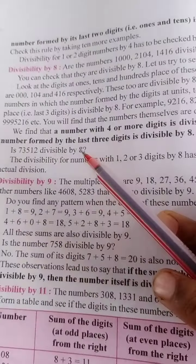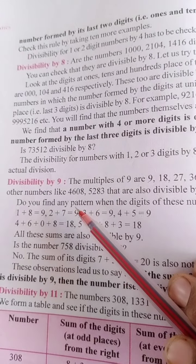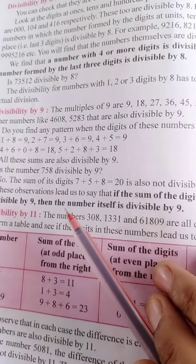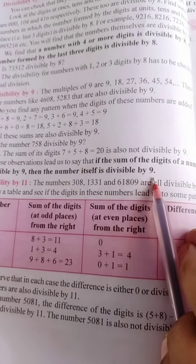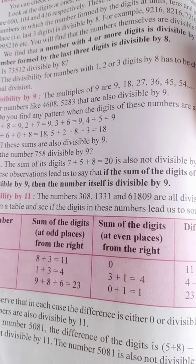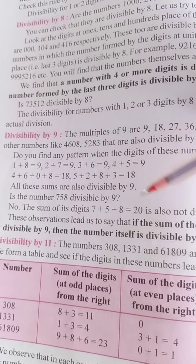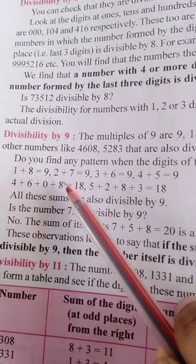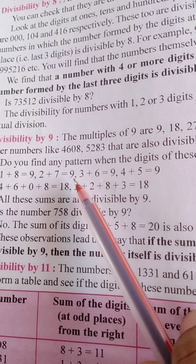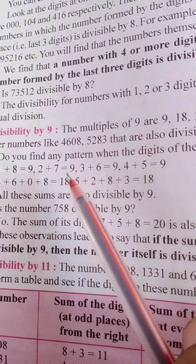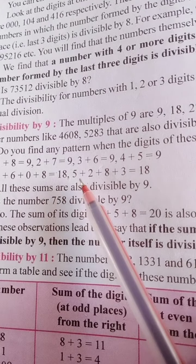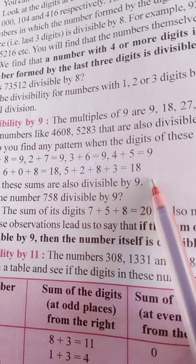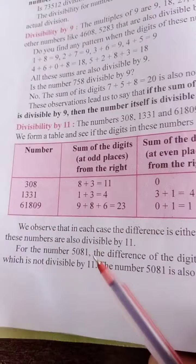Divisibility by 9: if the sum of the digits of a number is divisible by 9, then the number itself is divisible by 9. For example, 5 plus 2 plus 8 plus 3 equals 18, so that number is divisible by 9.